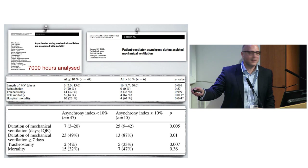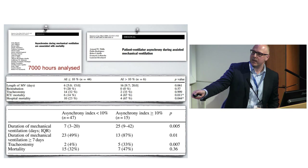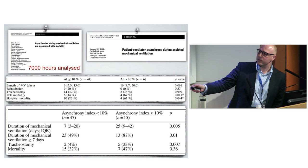You can see that patients with an asynchrony index less than 10% — that's the length of mechanical ventilation compared to the other ones — are very much the same in terms of duration of mechanical ventilation. And although these are small studies and the p-value is not very different, you would agree that there is a certain difference between the two.